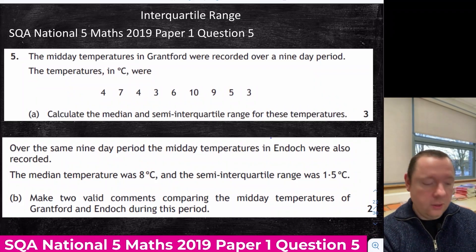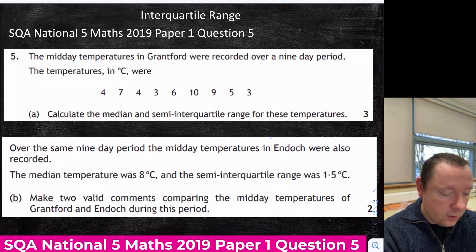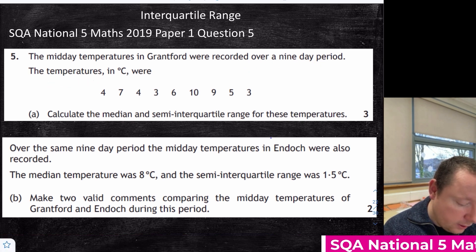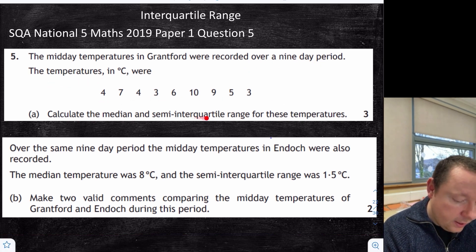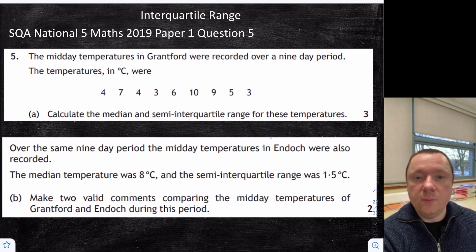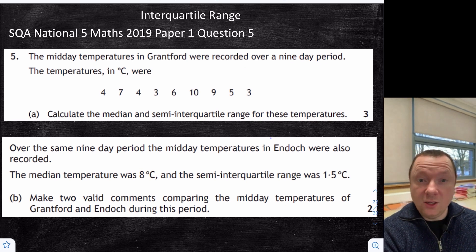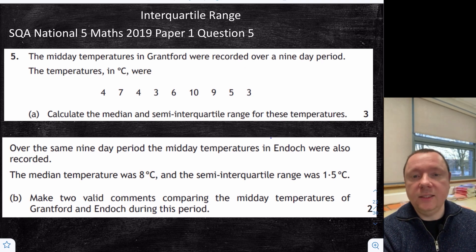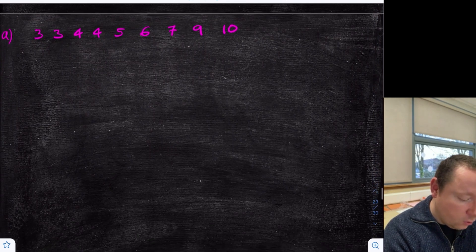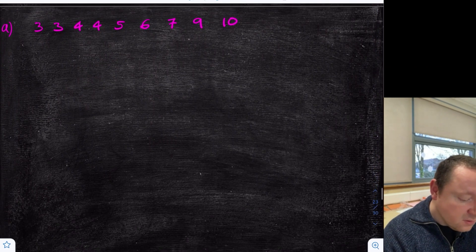National 5 Maths 2019, Paper 1, Question 5 — interquartile range. The midday temperatures in Grantford were recorded over a 9-day period. Calculate the median and semi-interquartile range. For median and interquartile range, we need the data to be in order.